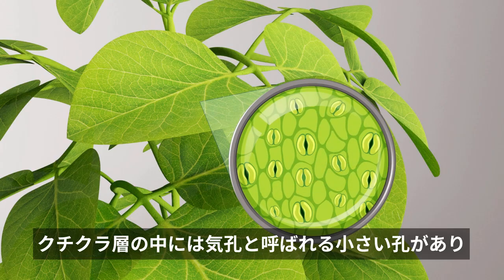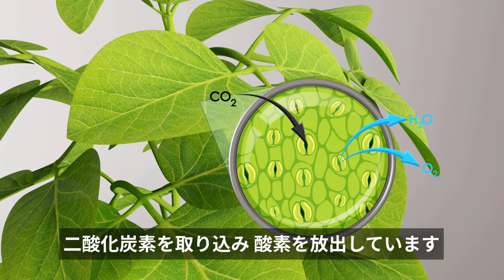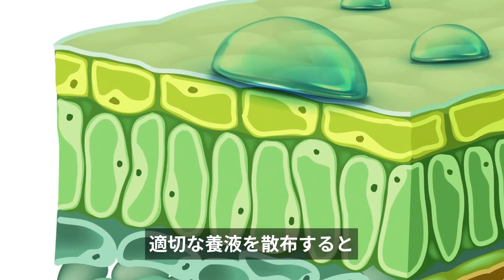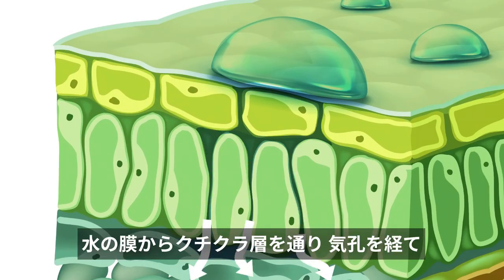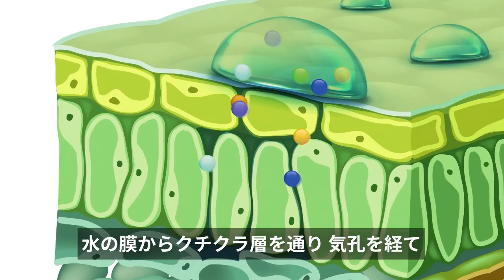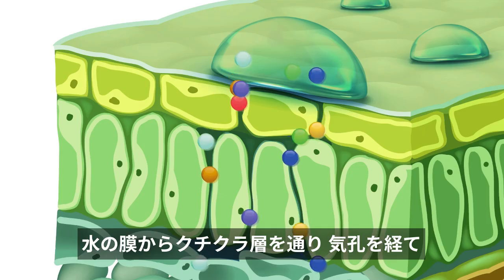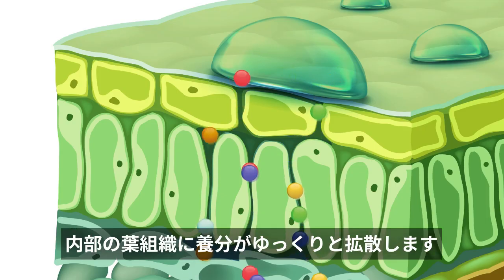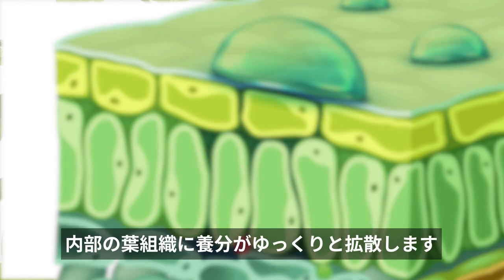Within the cuticle there are tiny pores called stomata that let in CO2 and let out oxygen. When a leaf is sprayed with a suitable fertiliser solution, there will be a slow diffusion of nutrients from the water layer across the cuticle and through the stomata to the internal layers of the leaf tissue.